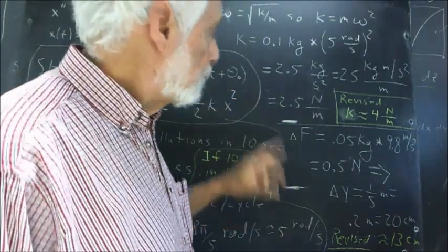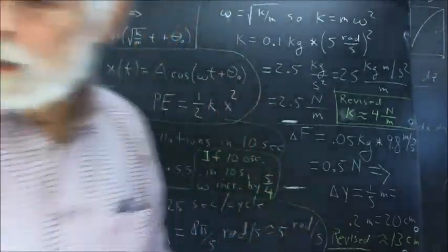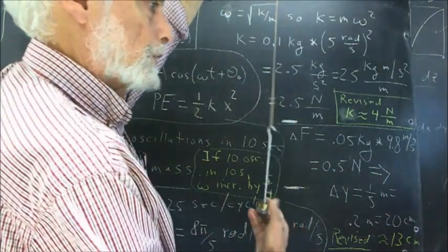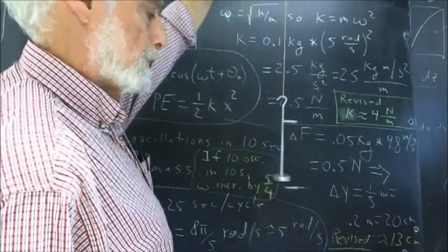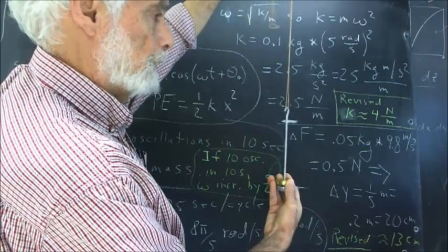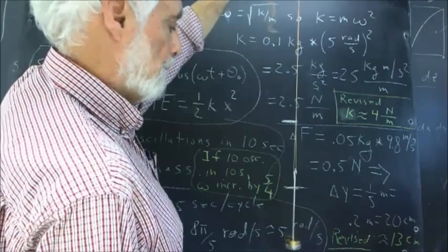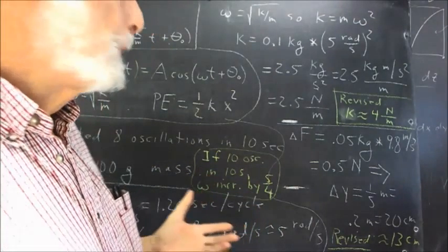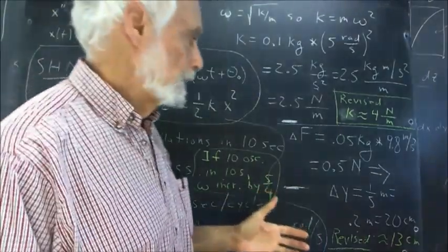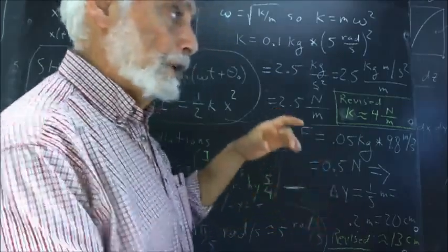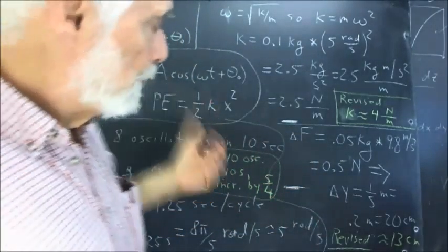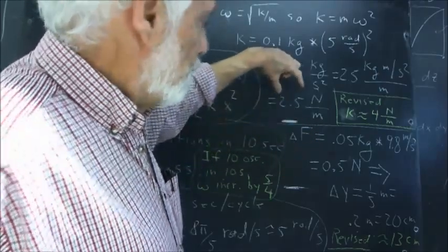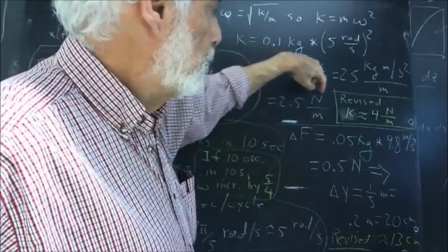That would imply that if we change the weight on the oscillator, of course if I remove the 50-gram mass or the half newton weight, the length of the rubber band changes. If I add it back, it changes back again. So we wanted to predict what would happen if we took the 50-gram, .05-kilogram mass off of the system.